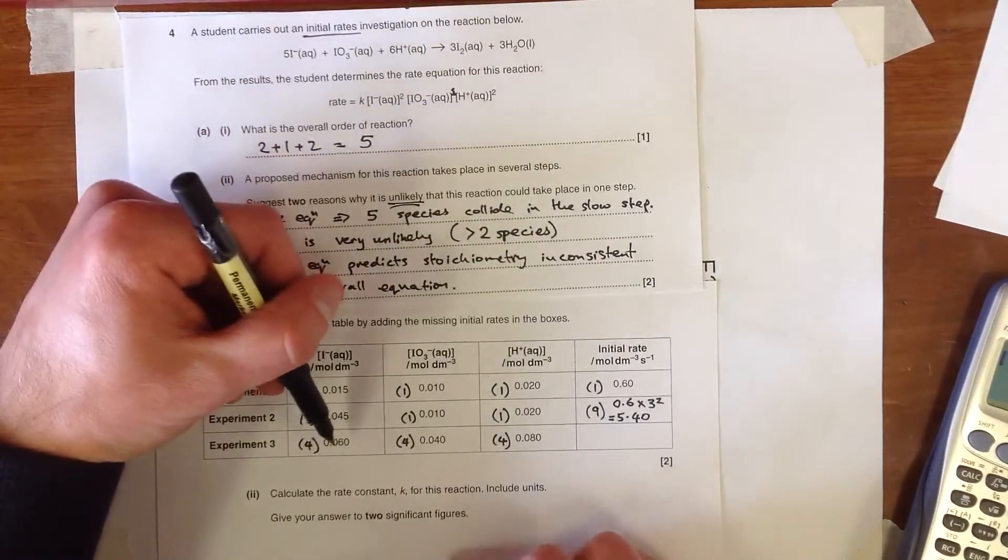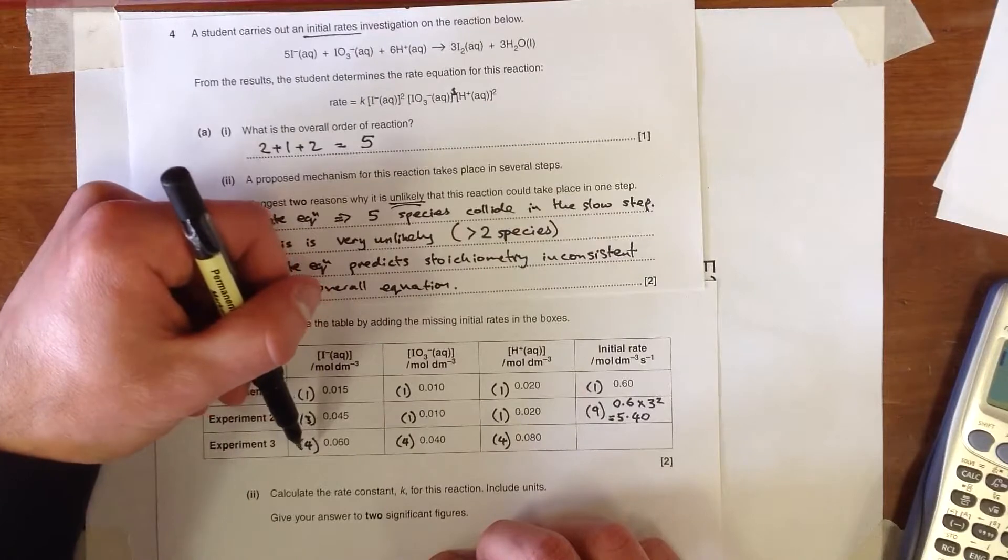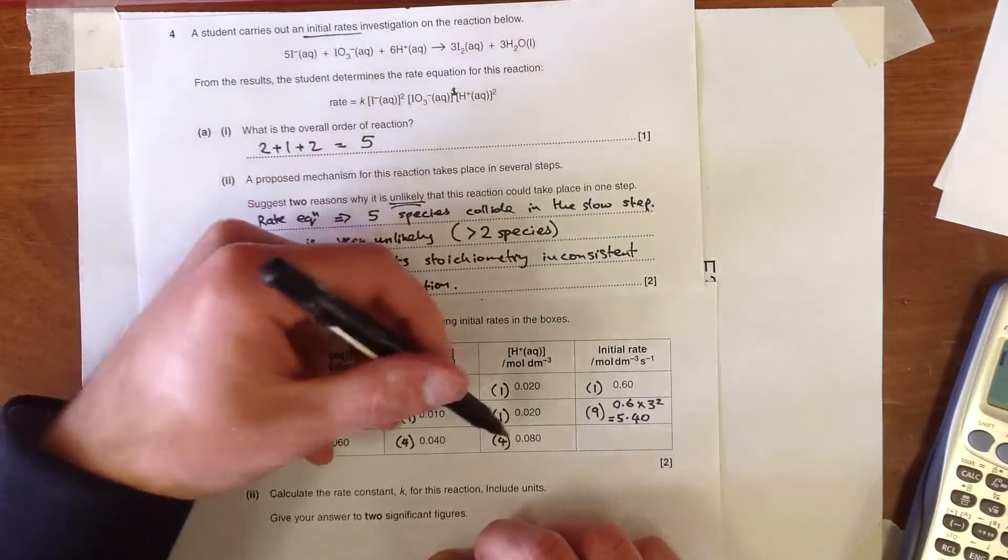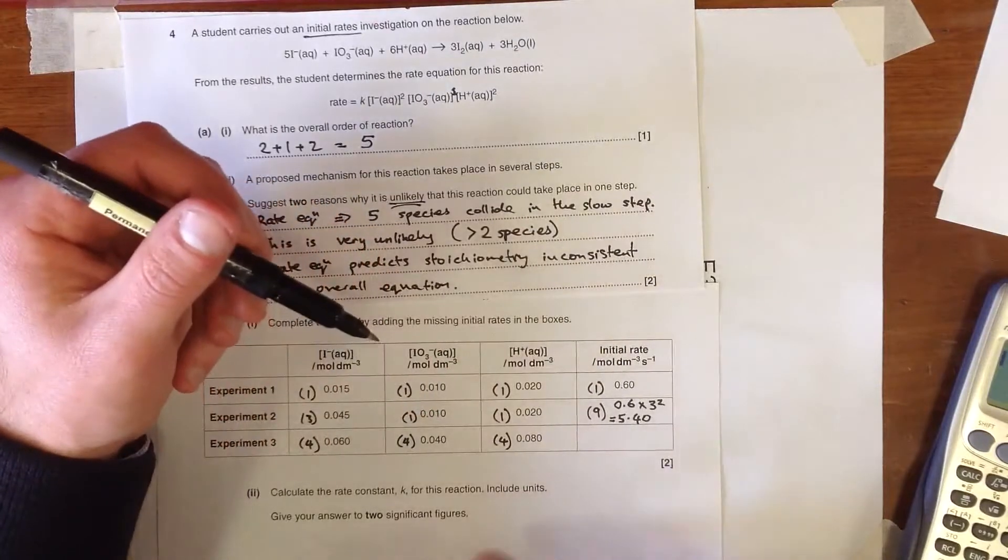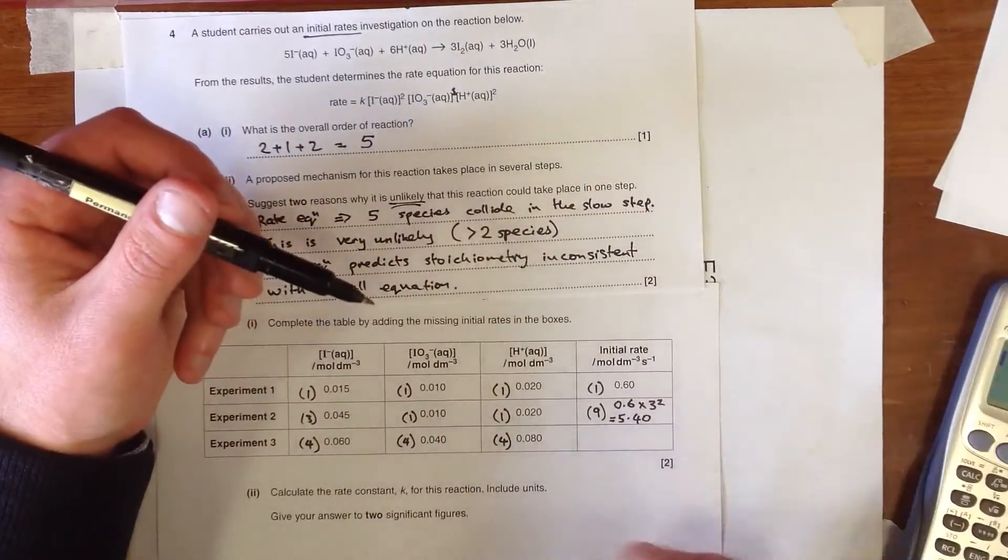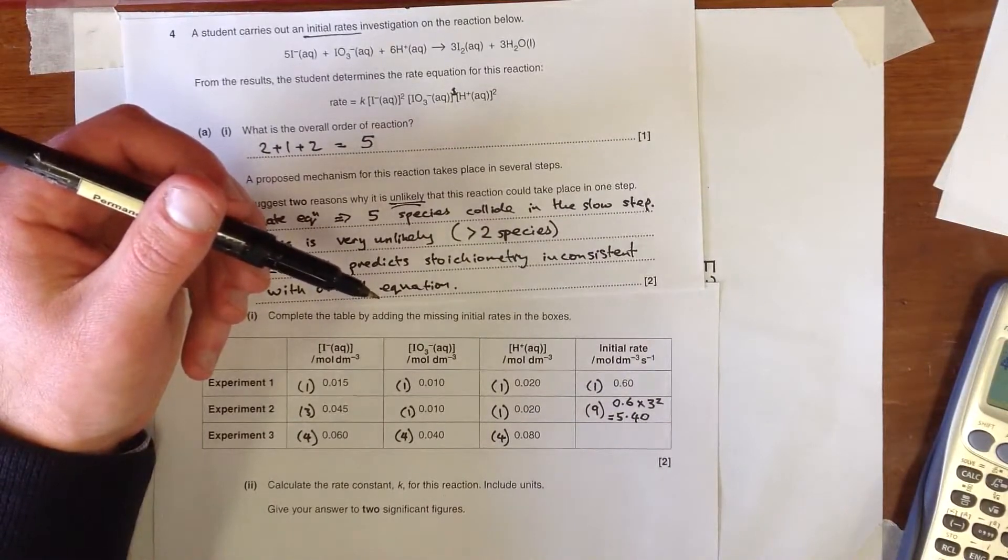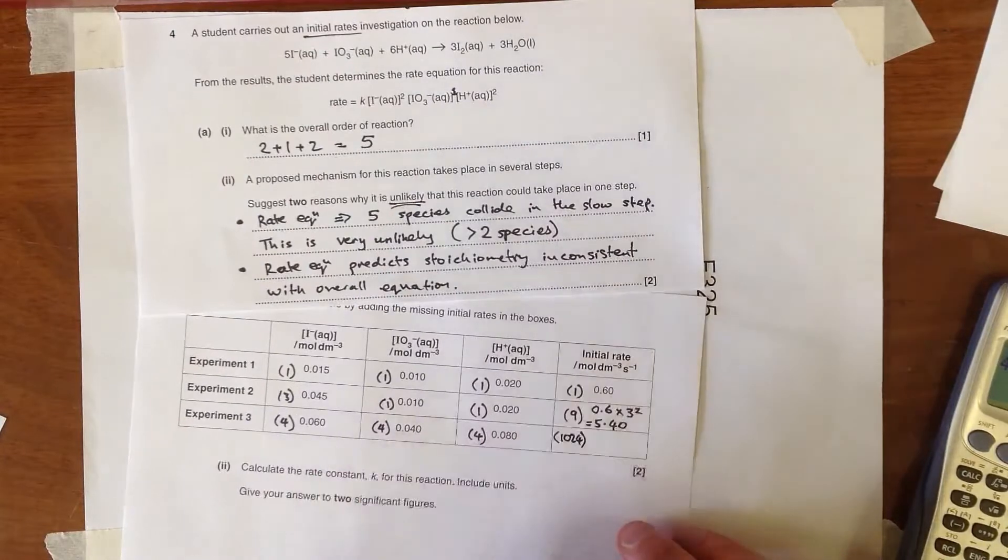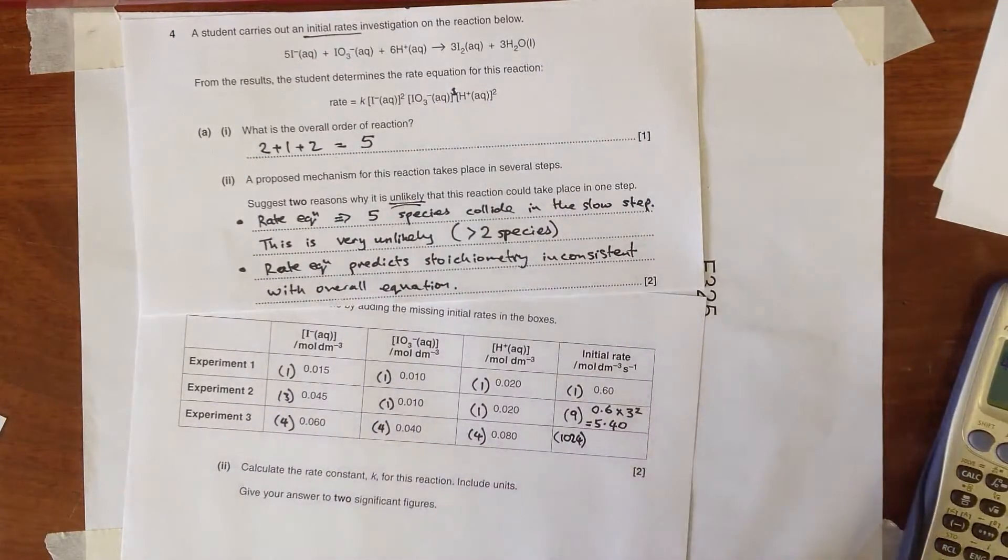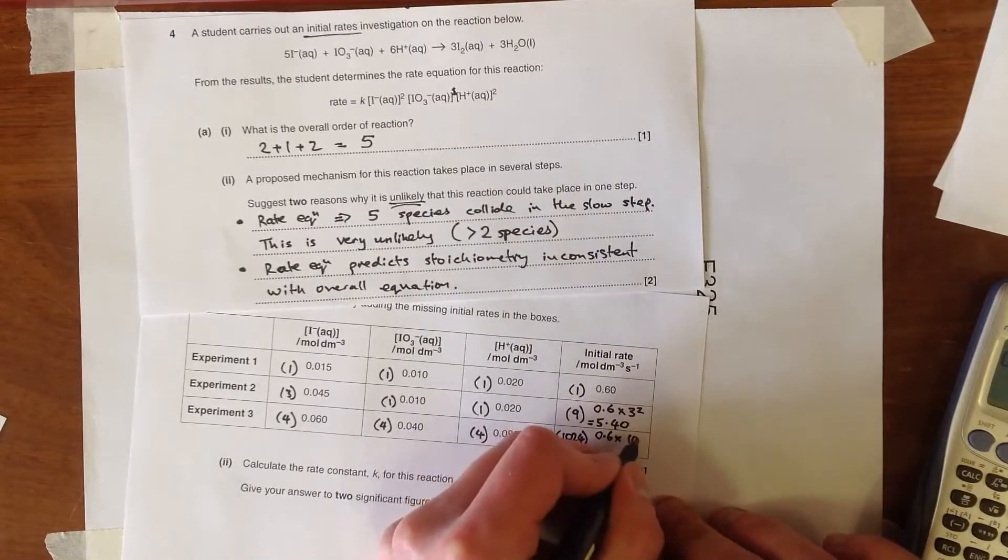or we can just think about we're going to multiply everything. This would be four squared, this would be four squared, sorry, this would be four, and this would be four squared. So we're multiplying by four squared, four, and then four squared, which is the same as multiplying by four to the five. Now four to the power of five is 1024, so this needs to be 1024 times that rate. So if we multiply that through, we're going to get 614, so we need to 0.6 times 1024,